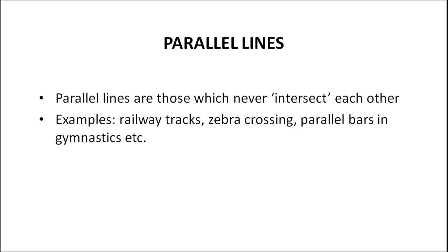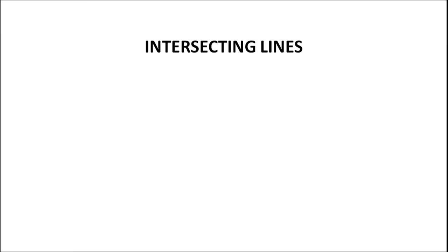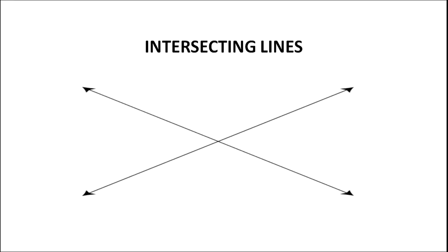Now we will deal with intersecting lines. Can we make intersecting lines from a set of parallel lines? We just tilted the pair of lines in such a way that the lines meet each other — in other words, the two lines cross each other, or we can say the two lines have intersected. Now we are very much closer to the concept of angles.